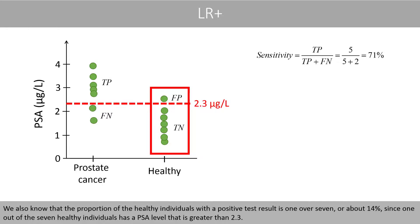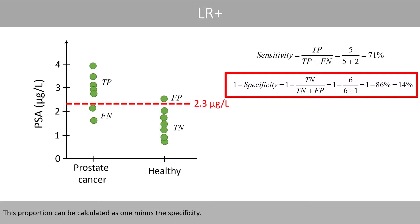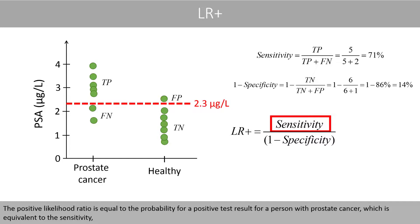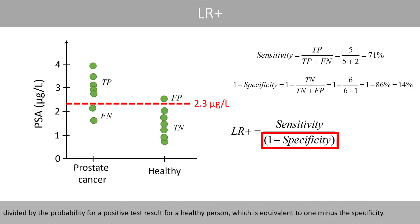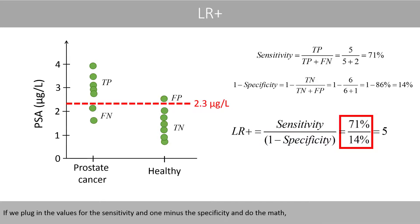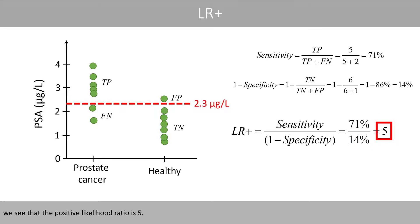This is because 1 out of 7 healthy individuals has a PSA level greater than 2.3. This proportion can be calculated as 1 minus the specificity. The positive likelihood ratio is equal to the probability of a positive test result for a person with prostate cancer — which is equivalent to the sensitivity — divided by the probability of a positive test result for a healthy person, which is equivalent to 1 minus the specificity. Plugging in the values, the positive likelihood ratio is 5.